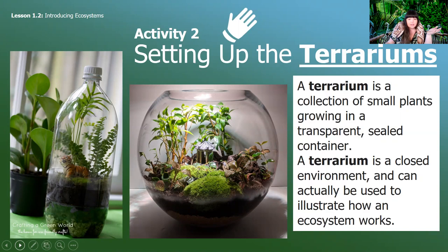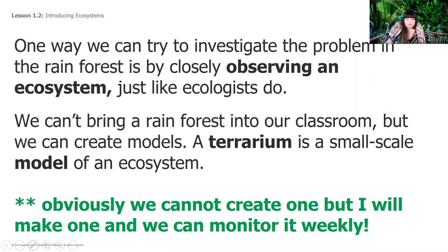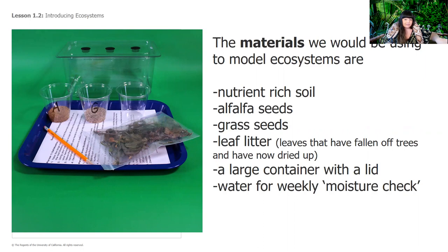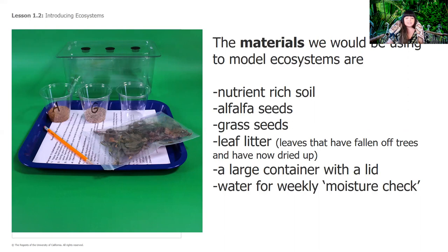Obviously we can't bring a rainforest into our classroom, but I did want to talk about the materials that would have been inside it. We were going to put in nutrient-rich soil, alfalfa seeds, grass seeds, and leaf litter — which is just leaves that have fallen off trees — they create their own kind of layer on the ground in the rainforest, and those are important. We'll talk about that later. One of the jobs everyone would have had when we created the terrarium would be doing moisture checks: is the soil moist enough? When I do our weekly checks, I'll be checking whether it needs more water.